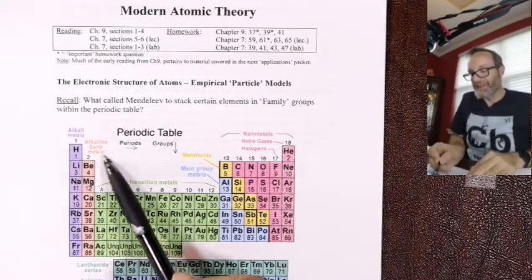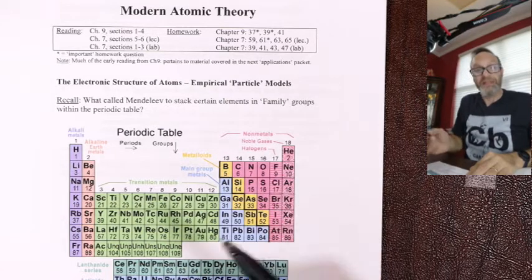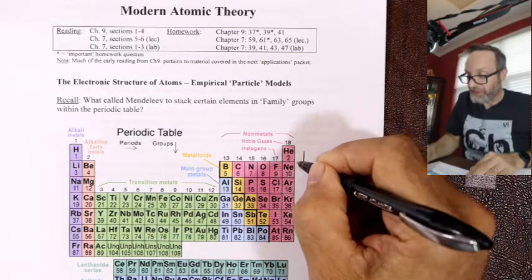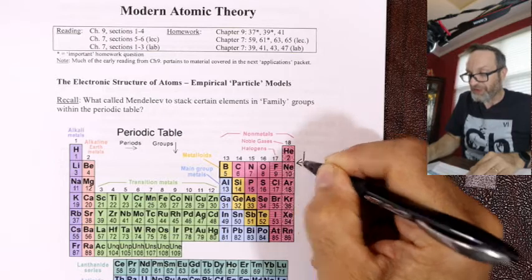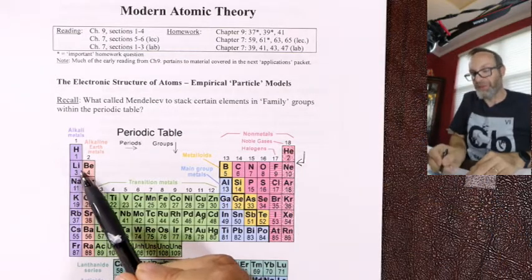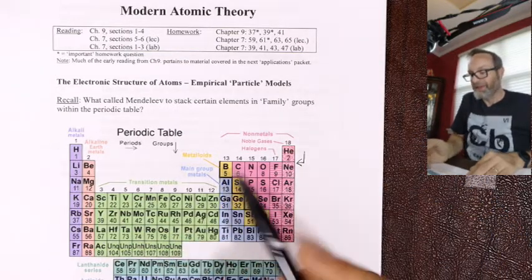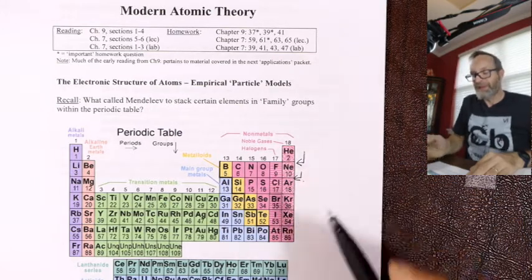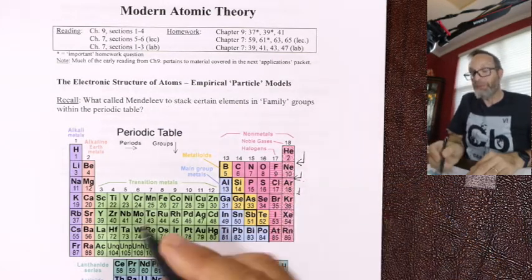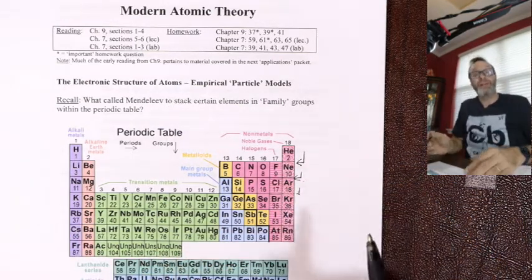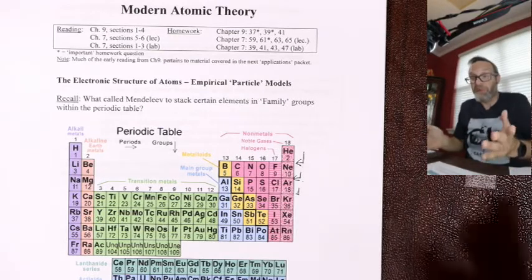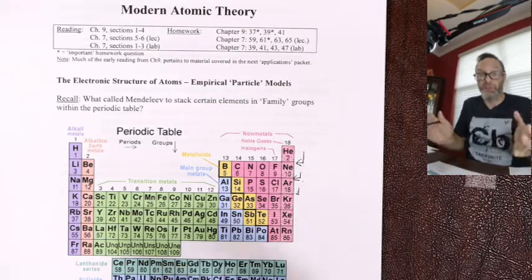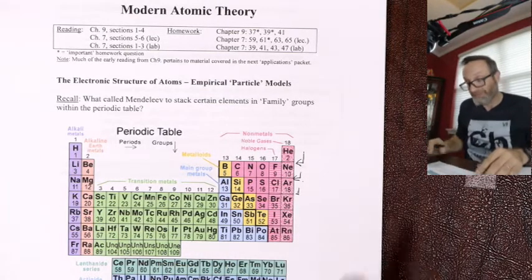Mendeleev did his order of weights, and then he did something really smart — he got to helium and he pressed return on his ancient typewriter. So lithium starts on row two, like reading a book. Then he got to neon and pressed return, then argon, pressed return. He made rows, which are called periods. That's why the periodic table is called the periodic table — because it has rows called periods.